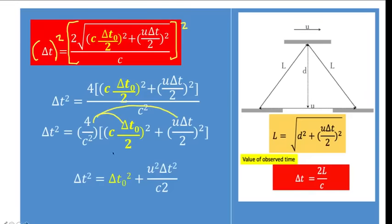Distributing to the second term: the 2² equals 4 cancels with the 4, leaving u²·delta t²/c². So after distributing, we have: delta t² = delta t₀² + u²·delta t²/c². Gathering like terms — delta t² appears on both sides — we subtract u²·delta t²/c² from both sides to get: delta t² − u²·delta t²/c² = delta t₀². Factoring out delta t² on the left gives: delta t²·(1 − u²/c²) = delta t₀².